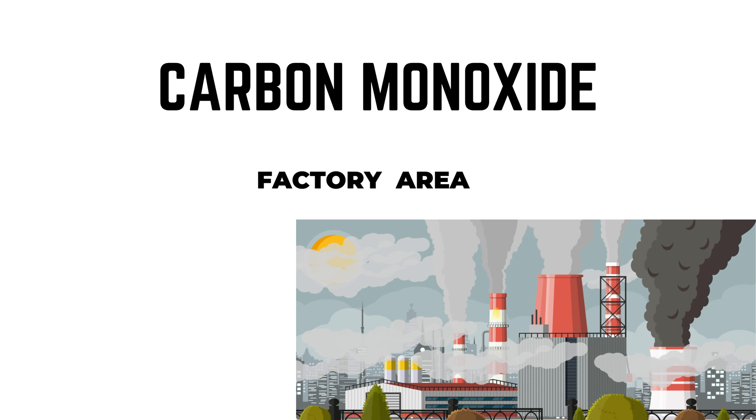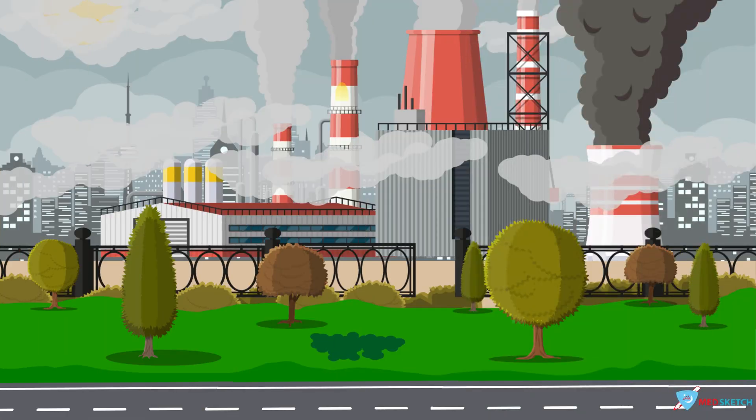Basically, carbon monoxide is invisible and colorless and belongs to the category of asphyxiants. You can see the white smoke or invisible smoke in the backdrop. It represents its invisible and colorless nature.